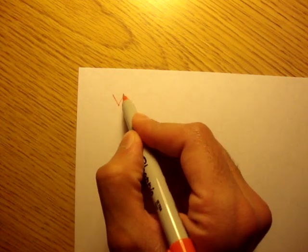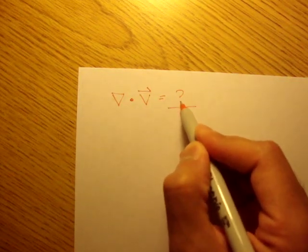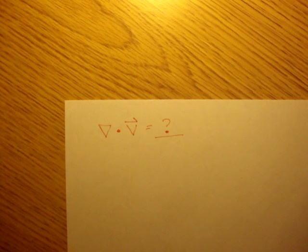All right, so in this example, we're going to do an example involving dilation rate. And remember from the last video, that dilation rate is just whatever the number is for del dotted with v. So they want to know what the dilation rate is.